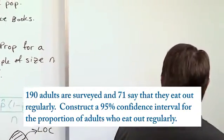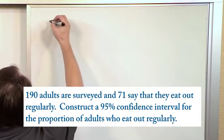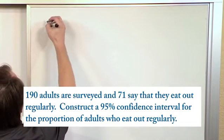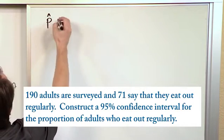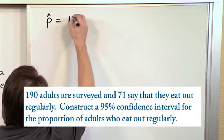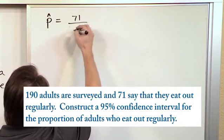The first thing you do is write down what you know. We know how many people we asked and how many said they eat out regularly, so from that we can calculate p-hat. Notice there's a hat—this means this is the sample proportion of people who eat out regularly, and that's going to be 71 over 190.